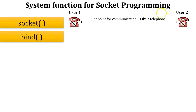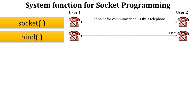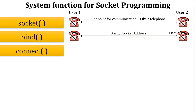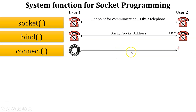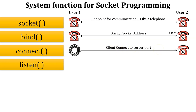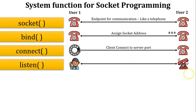The next function is bind. In telephone communication, a unique number is assigned to each telephone, so using the bind function we assign a unique socket address. The next function is connect — whenever user1 wants to communicate with user2, user1 dials user2's telephone number and tries to connect, so using the connect function the client connects to the server port. The next function is listen — whenever user1 is calling user2, user2 listens for the incoming telephone ring, meaning using the listen function the server is waiting for the connection.